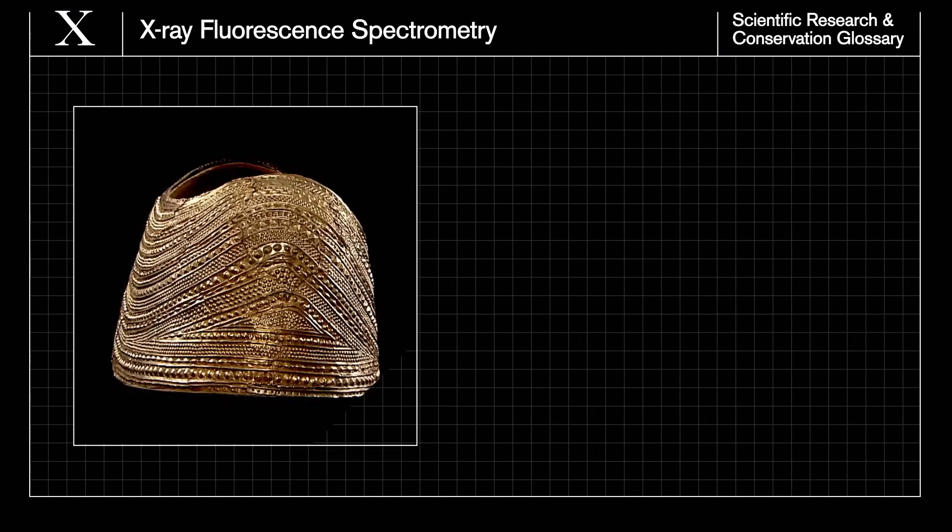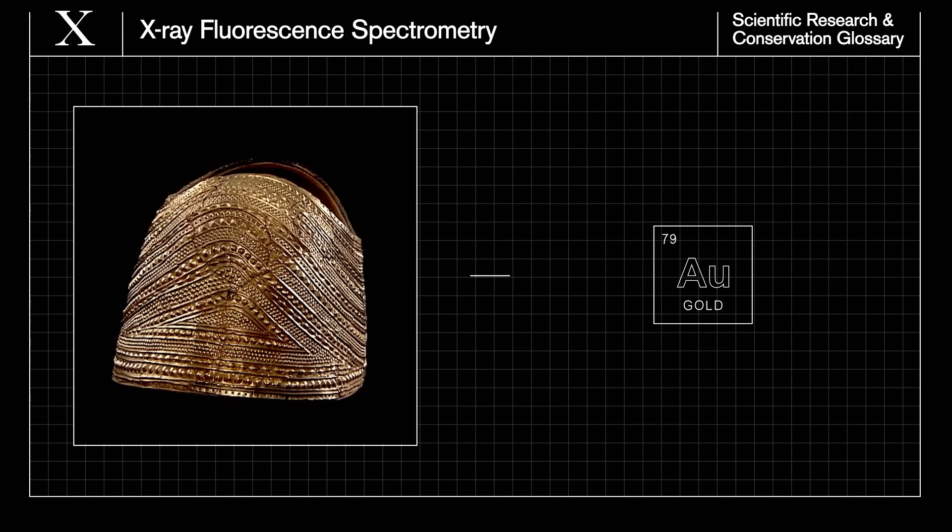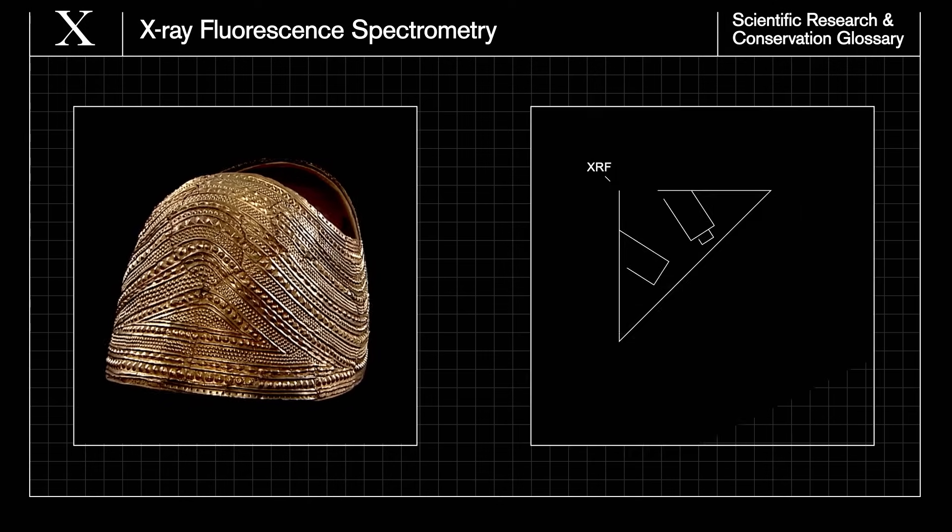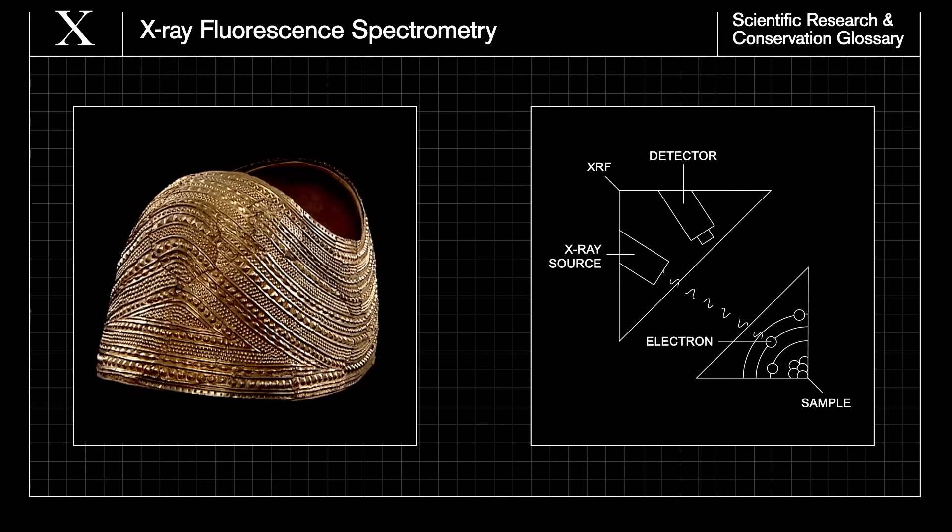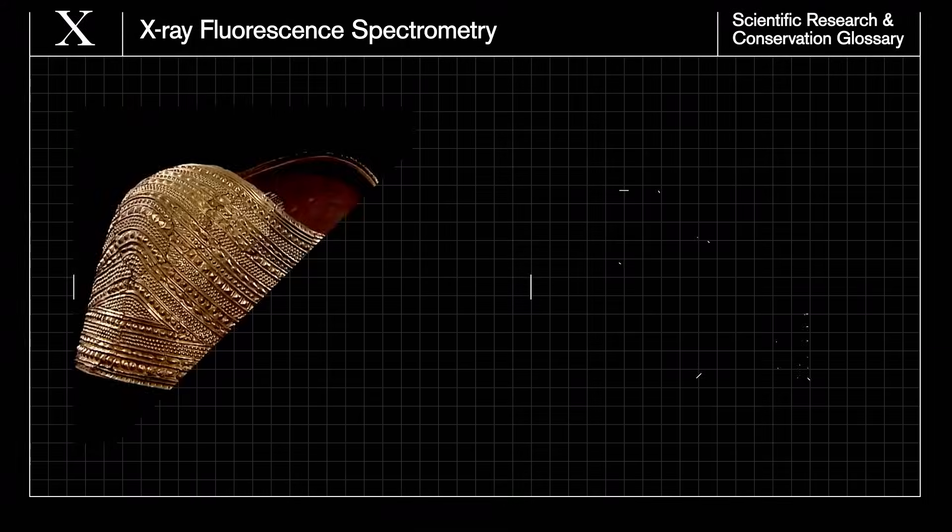X-ray fluorescence spectrometry, or XRF, identifies the chemical elements in objects. X-rays are fired into a sample, causing atoms to emit fluorescent X-rays, which work as a fingerprint for the elements.